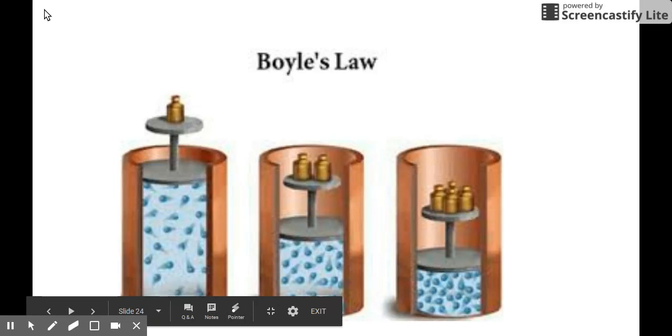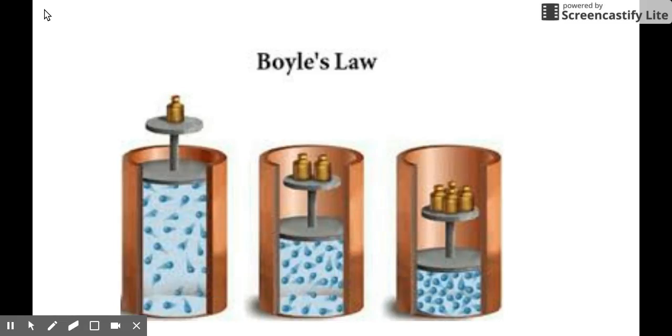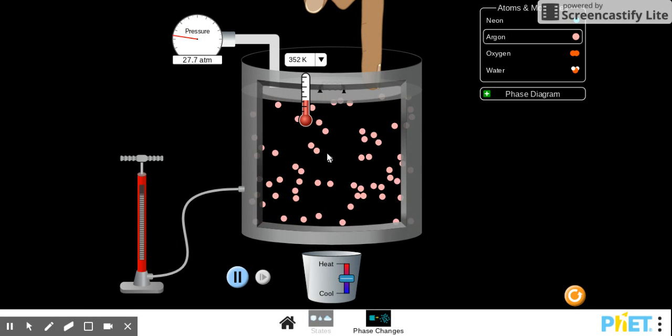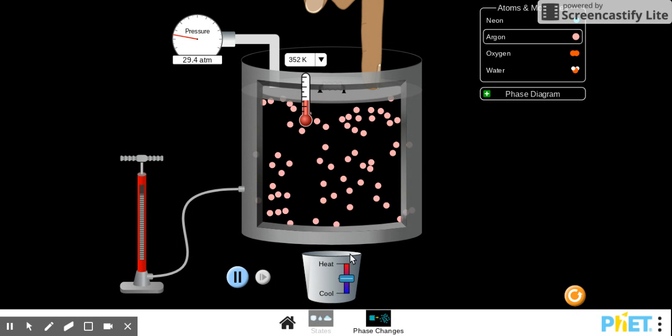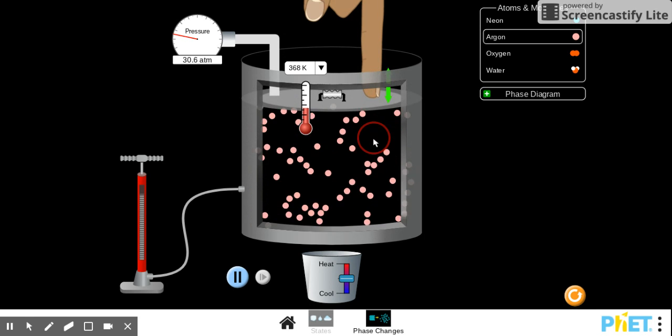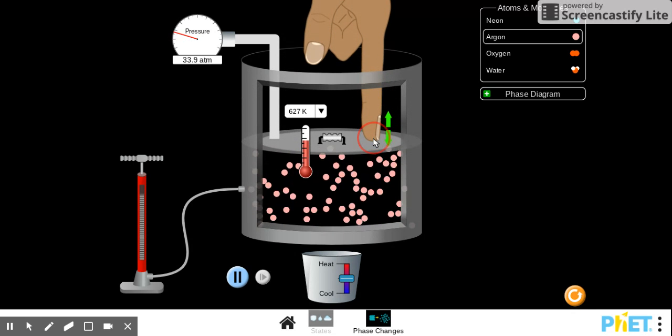And remember, Boyle's law is considered to have constant temperature and constant amount. When we talk about constant temperature, the average kinetic energy of the molecules are just the same. So they're moving at the same rate, at the same speed. But with smaller space for that movement, you'd expect frequent collisions and frequent heating on the walls of the container. Now, if you look at the PhET simulation, if you look at this particular illustration, at constant temperature, we don't vary the temperature and we also don't vary the amount inside, you can move up and down the volume.